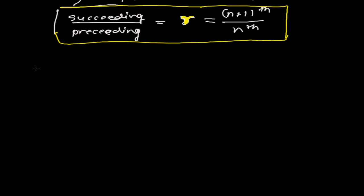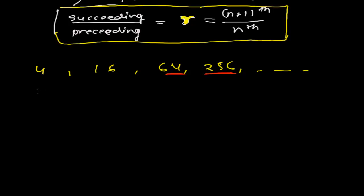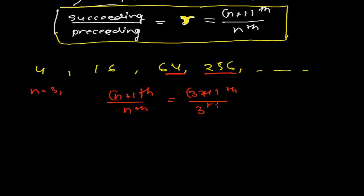For example, consider the sequence 4, 16, 64, 256 and so on. To verify it is geometric, the ratio of the succeeding term over the preceding term must be constant. Taking n = 3: the (n+1)th term is the 4th term (256) and the nth term is the 3rd term (64). Dividing: 256 ÷ 64 = 4.